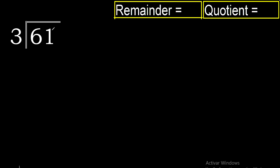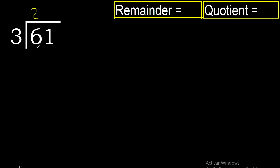61 divided by 3. 6 is not less than 3, therefore take 6. 3 multiplied by 3 is 9 — too much. 3 multiplied by 2 is 6. 6 minus 6 is 0.